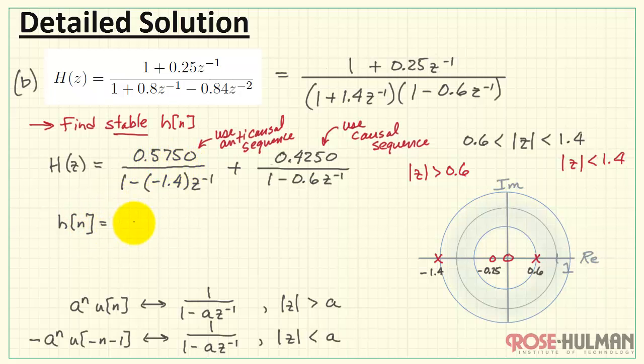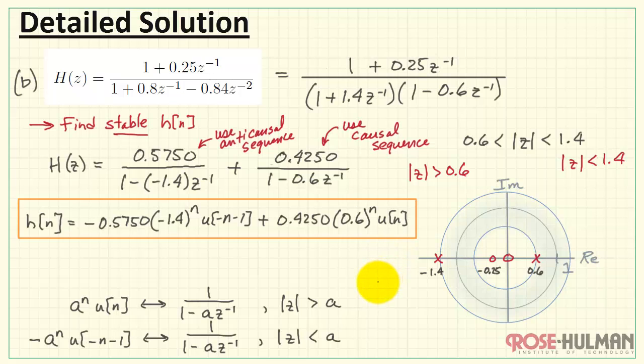Now we can write the impulse response. We'd have the scaling factor, and then we use the anti-causal sequence form. a corresponds to minus 1.4. We raise that to the nth power, and then multiply by the negative sign, and the reversed step function. Then we add in the scaled form for the other term. a is 0.6 in this case. We raise that to n. Multiply by our standard step function. And that's our result for part b.